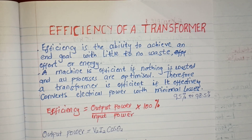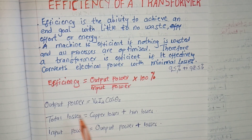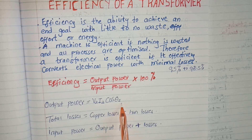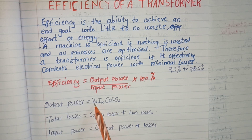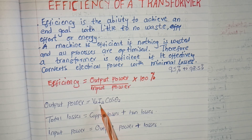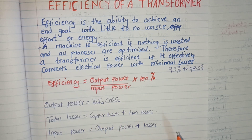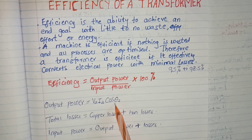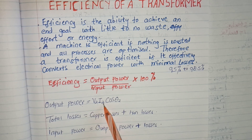Another important term: the output power is equal to V2 × I2 × cosθ2, where V2 is the voltage on the secondary side of the transformer and I2 is the current on the secondary side. So to get the output power of the transformer, we use V2 × I2 × cosθ2.